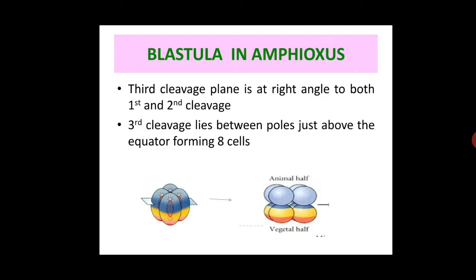The third cleavage is equatorial and lies between the poles, just above the equator. As a result, 8 blastomeres are formed. This cleavage occurs at an equatorial position.